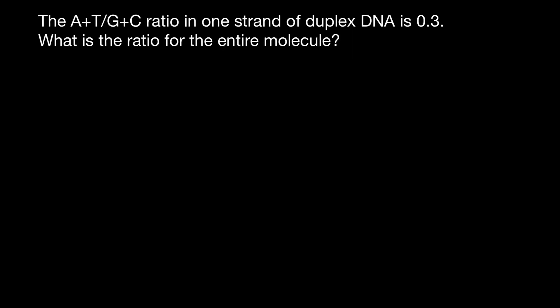This problem seems like the one I uploaded yesterday, but yesterday we had purines on one side of our ratio and pyrimidines on the other side. Today we have both purines and pyrimidines on one side and purines and pyrimidines on the other side. So our answer today is also going to be different.